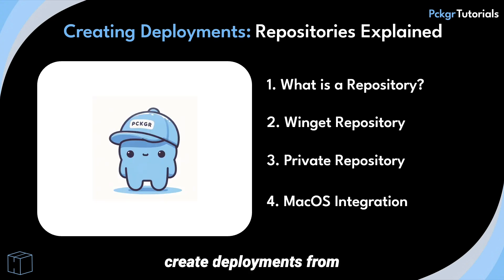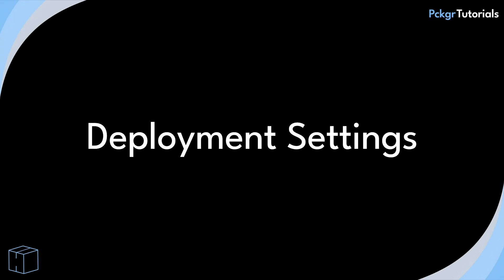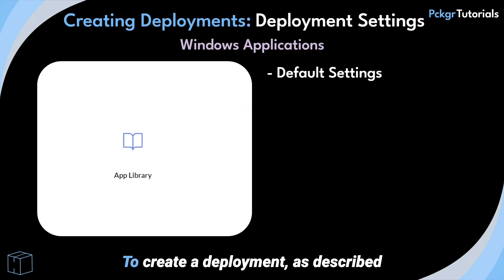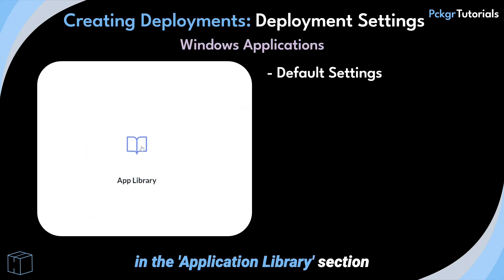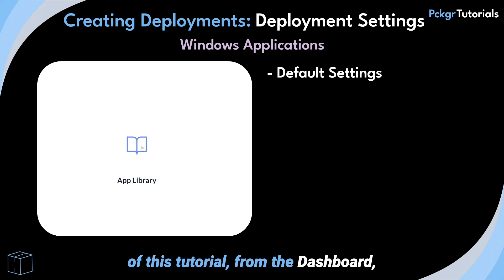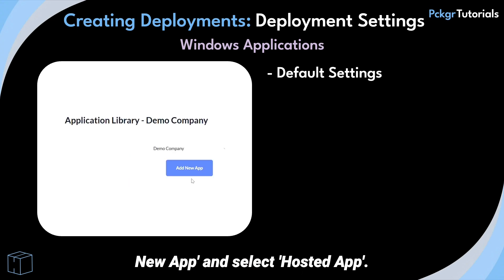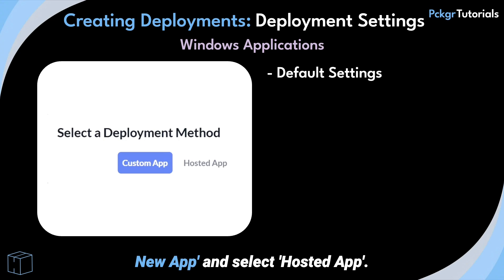Please check our documentation online for the current deployment features and restrictions for Mac application deployment through Packager. Now you are ready to create deployments from the application library. To create a deployment, from the dashboard go to Application Library, click Add New App, and select Hosted App.